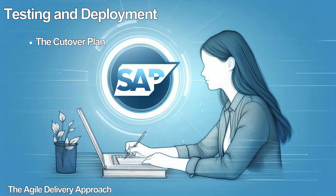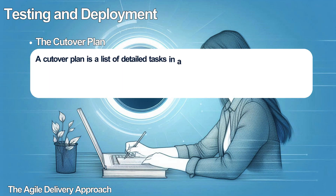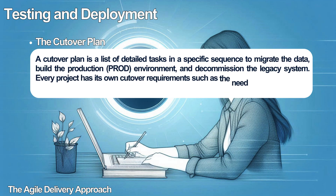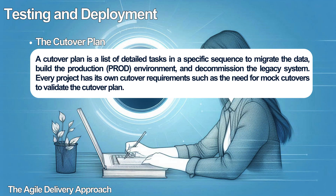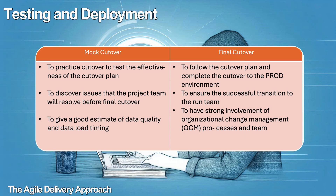The cutover plan becomes very important as you approach deployment. A cutover plan is a list of detailed tasks in a specific sequence to migrate the data, build the production environment, and decommission the legacy system. Every project has its own cutover requirements, such as the need for mock cutovers to validate the cutover plan. The new system is ready with all required business functionalities, but the cutover plan — prepared during the prepare phase and fine-tuned during the realize phase — may make or break the new system. It is common practice to have a mock cutover and a final cutover. The mock cutover allows a practice run to test the effectiveness of the plan, while the final cutover allows the team to follow the plan and complete the cutover to the production environment.